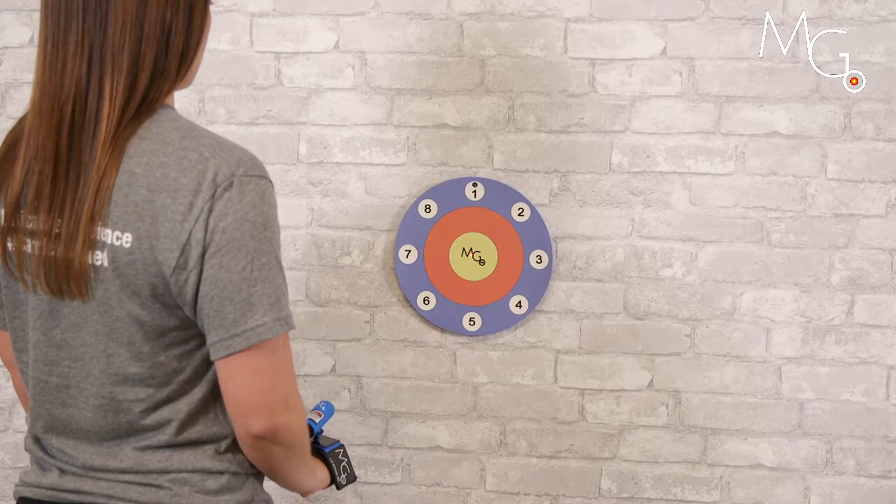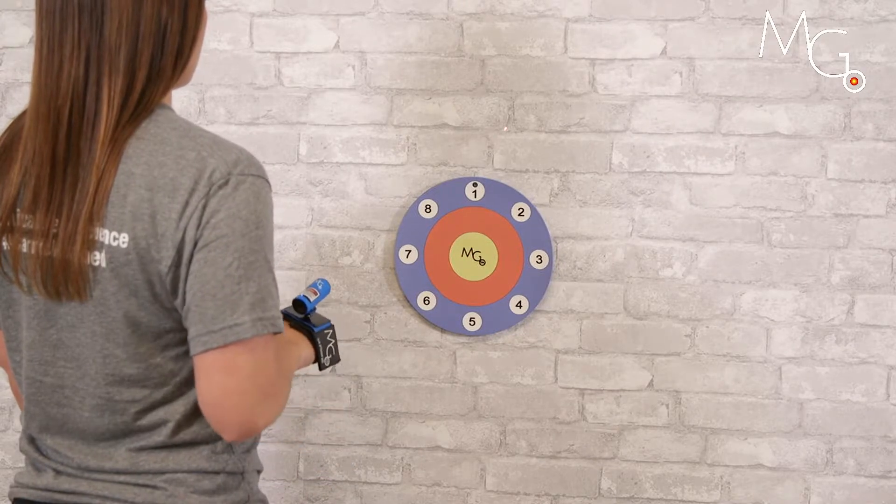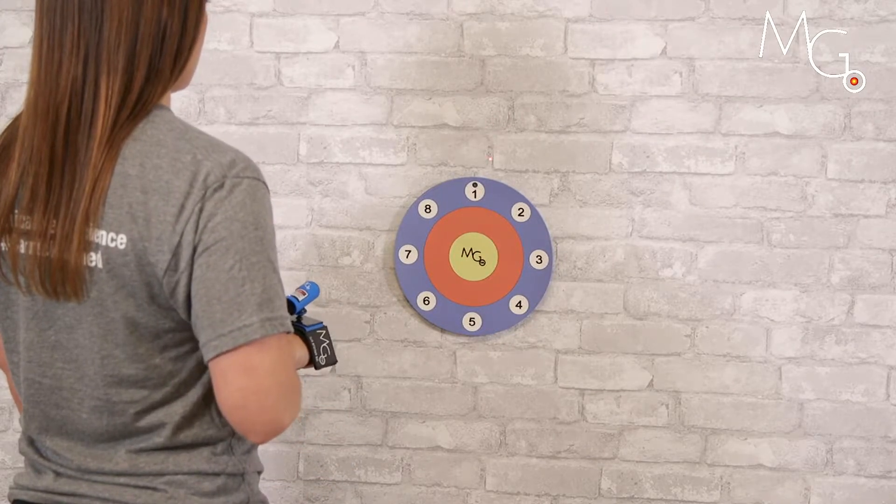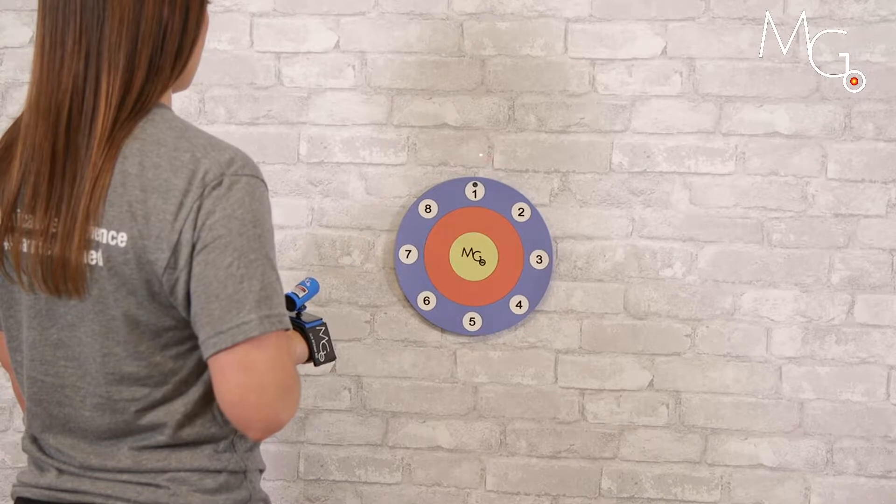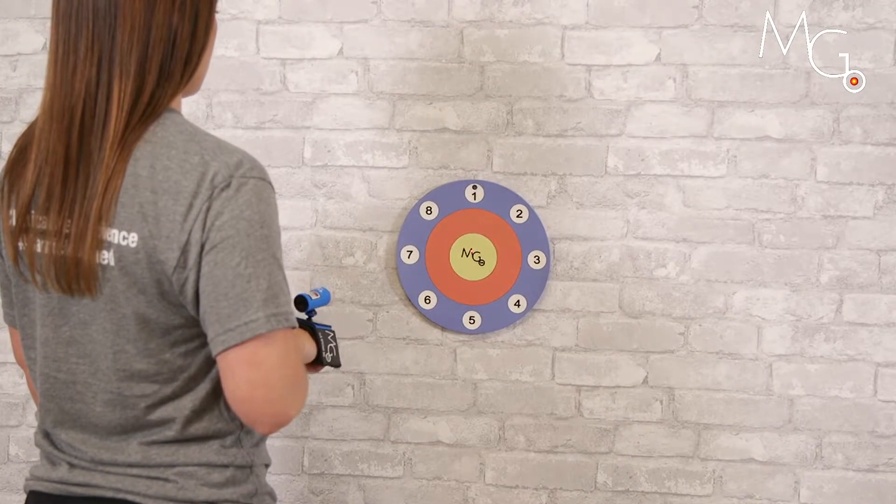Now let's work on wrist flexion. So let's have you bend your elbow up a little bit, bring the laser above the target, and now drop the laser down to the bullseye.